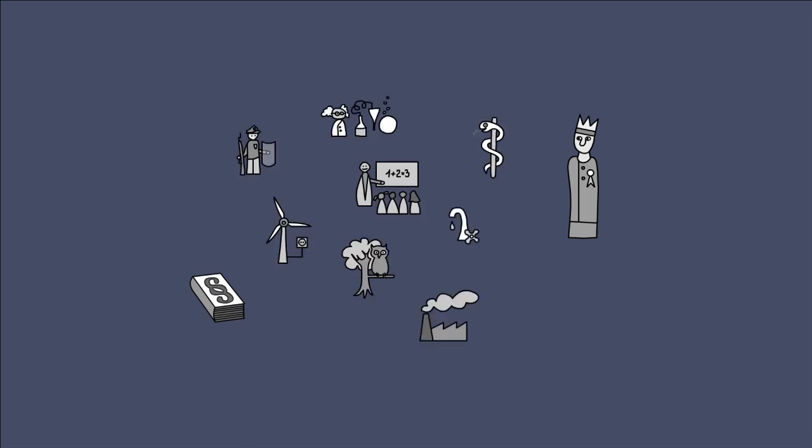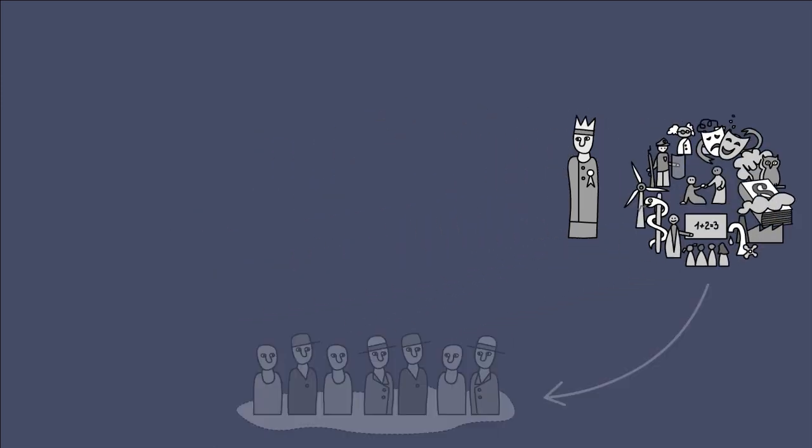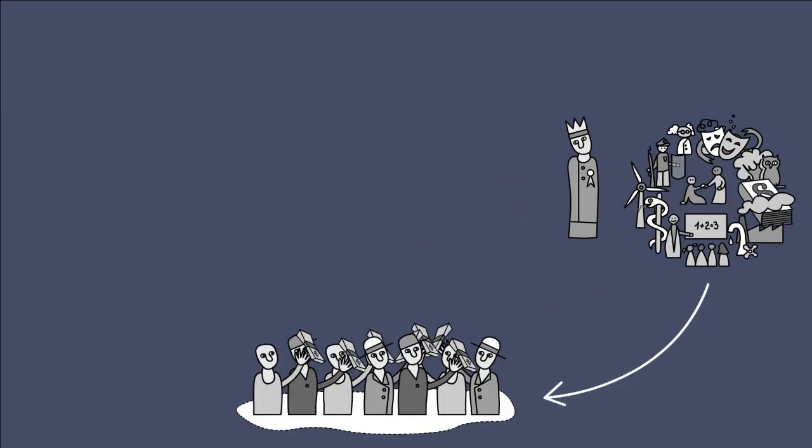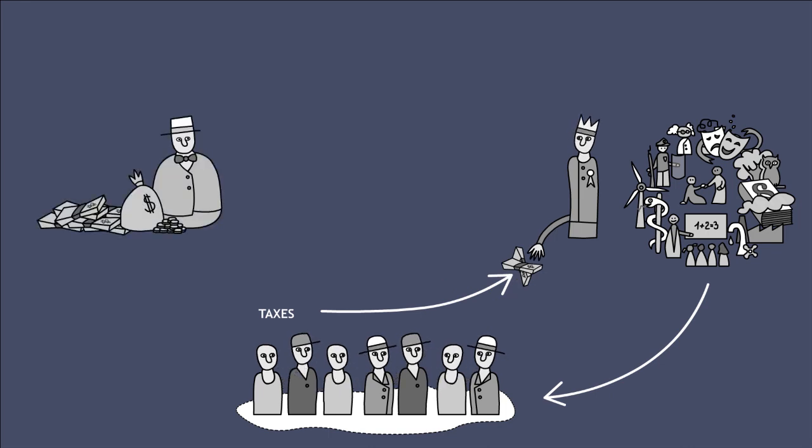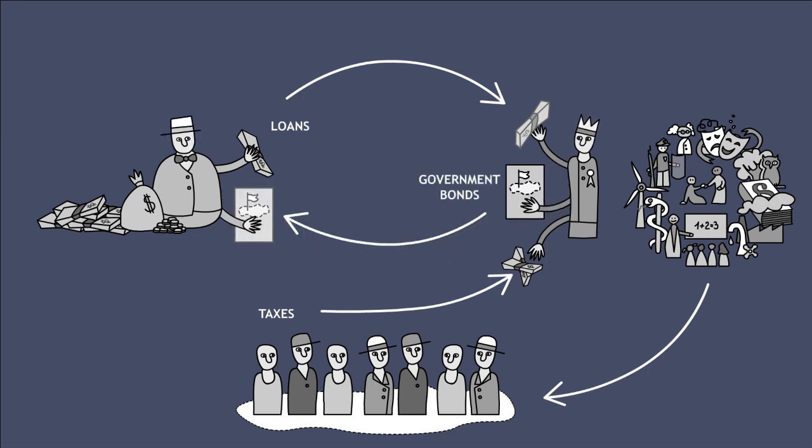Nations require huge amounts of money to fulfill their basic obligations and to remain viable for the future with infrastructure and economic and social programs. In many countries, including developing countries, taxes alone are not sufficient for this. So these nations take out loans on the international capital markets and award interest-bearing securities, also known as government bonds.